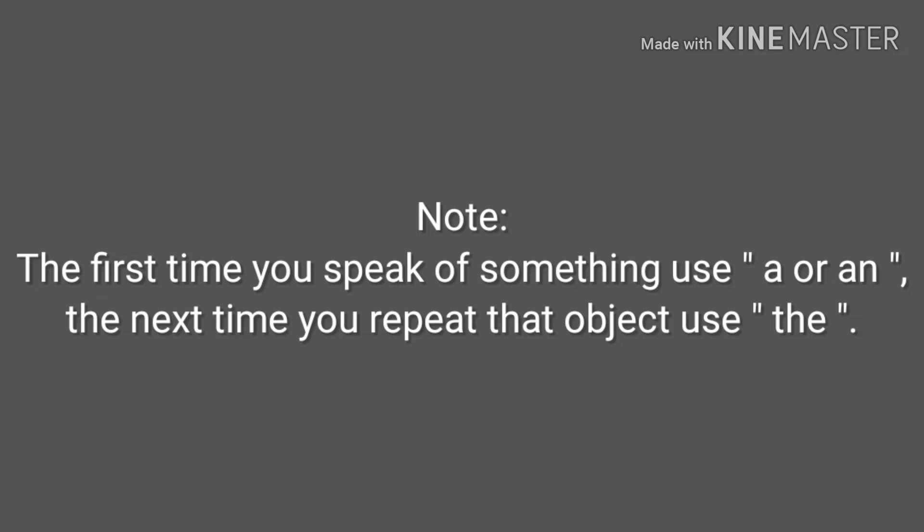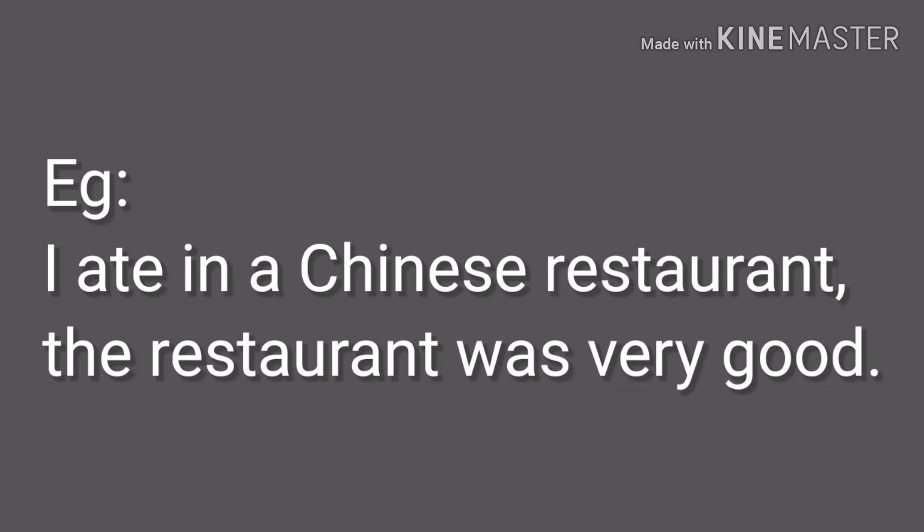Important note: the first time you speak of something, use 'a' or 'an'. The next time you repeat the object, use 'the'. Example: 'I ate in a Chinese restaurant' — any Chinese restaurant, unspecified. Then: 'The restaurant was very good' — now both parties know which restaurant we mean, so we use 'the'.